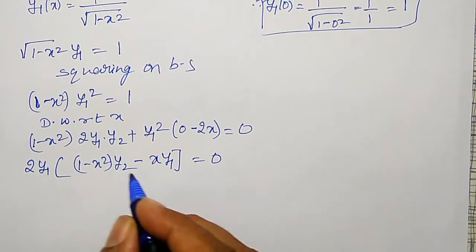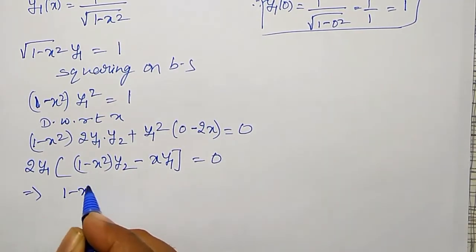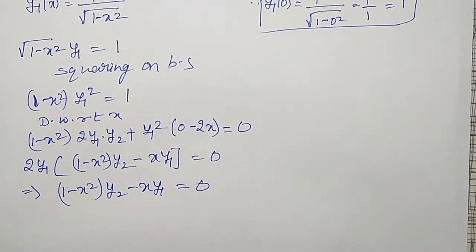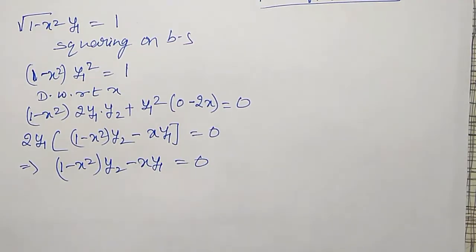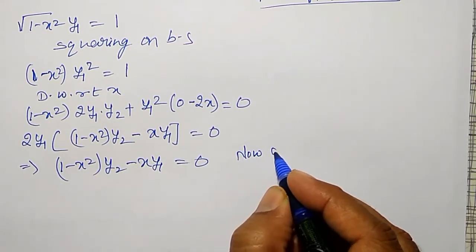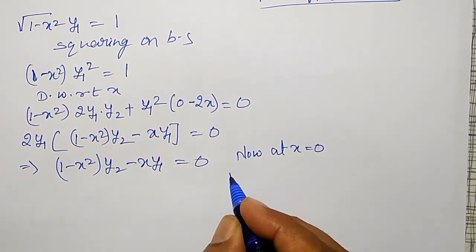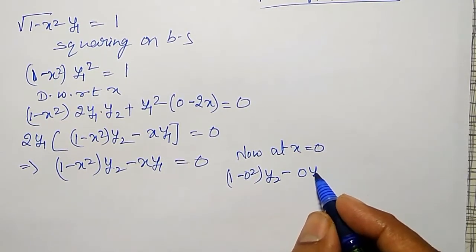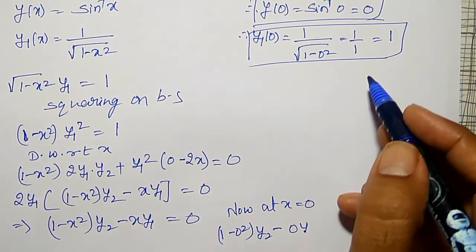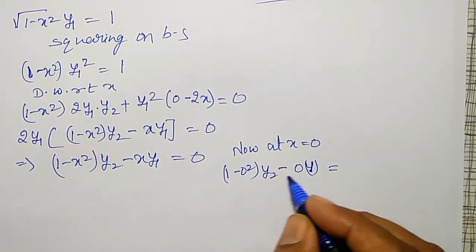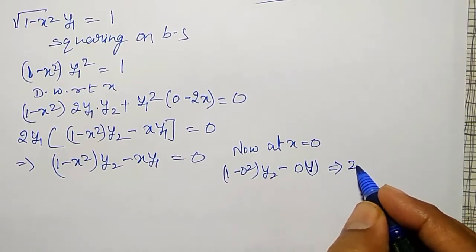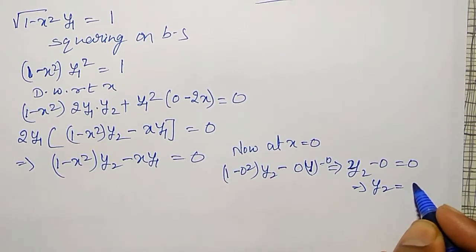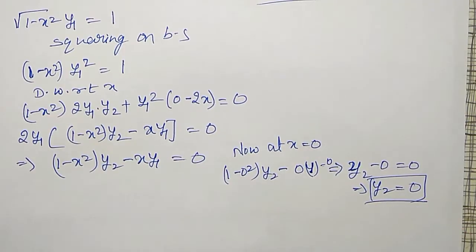At x = 0: (1 − 0)·y₂ − 0·y₁(0) = 0, which gives y₂ = 0. So y₂ also vanishes. After two derivatives, we still have only one non-vanishing term.